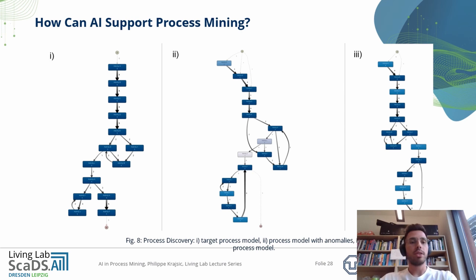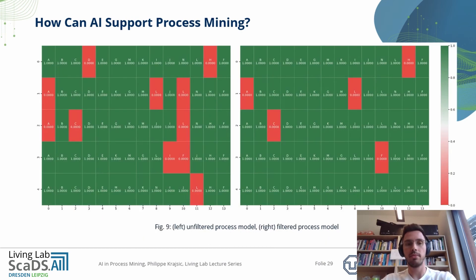Here we can see the discovered process models: first, the target process model; second, the process model with anomalies; and third, the filtered process model. To get a better idea of what has changed after applying the filter, we can look at another heat map showing the difference between the unfiltered process on the left-hand side and the filtered process on the right-hand side. Green-marked blocks are in the right order, red-marked blocks are still in the wrong order. Due to a high variance of the processes and less available data, it is hard to detect all of the anomalies.